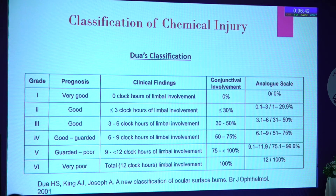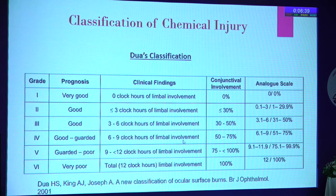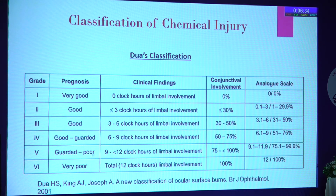In Dhuayatal's classification, they considered limbal ischemia along with conjunctival involvement, since these are the two sites from which the re-epithelialization process occurs. In Grade 4, there is 50% limbal damage and 50% conjunctival damage, whereas in Dhuayatal's classification, a very poor prognosis is only assigned when there is 100% limbal involvement and 100% conjunctival involvement.